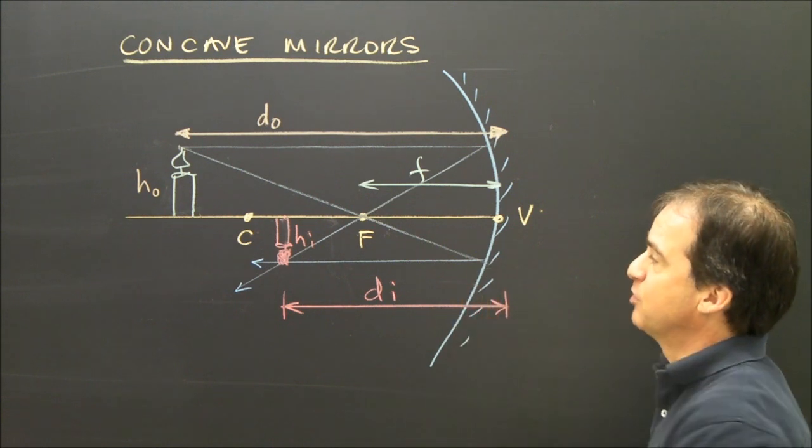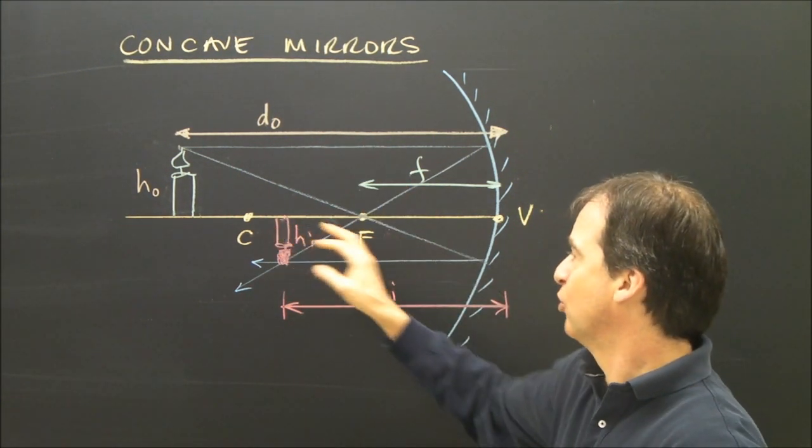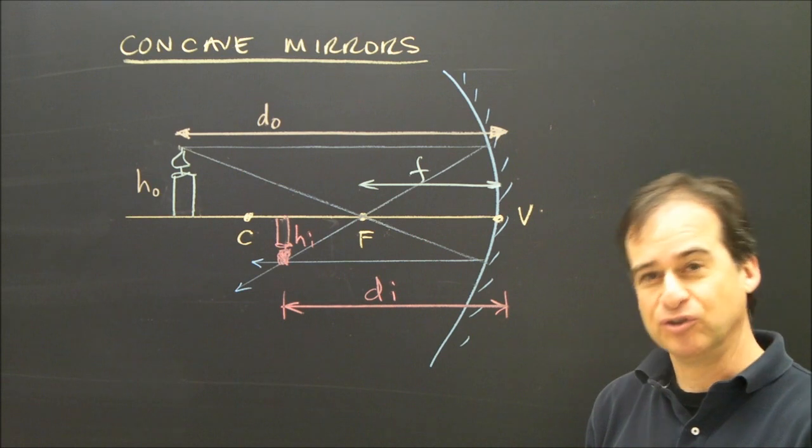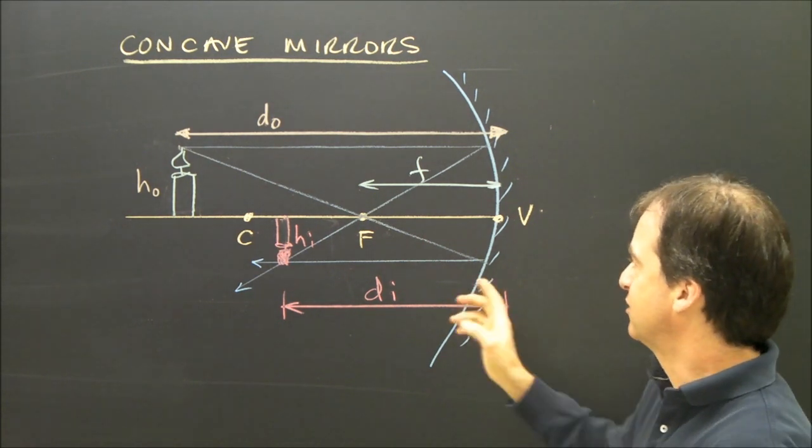The variables I'm interested in are DO, DI, HO, HI, and F. Those are the variables that are important.